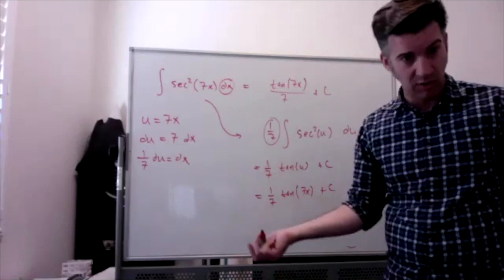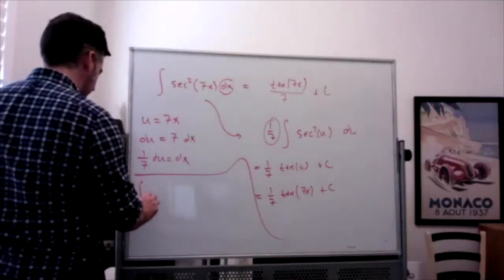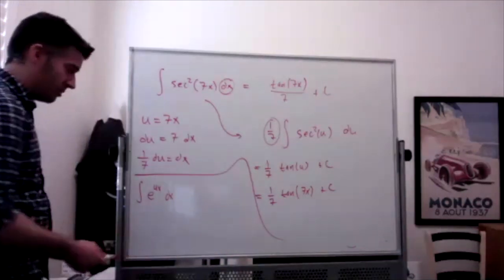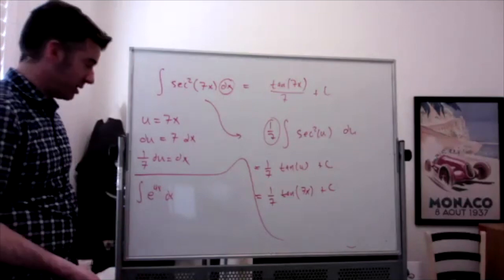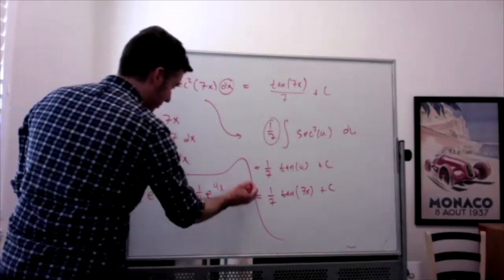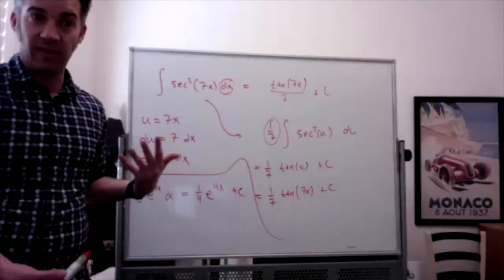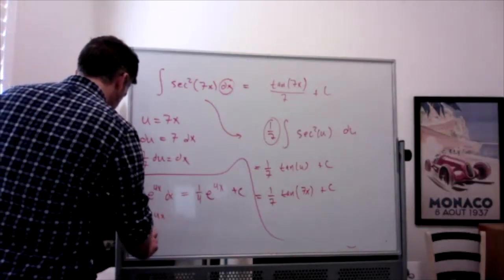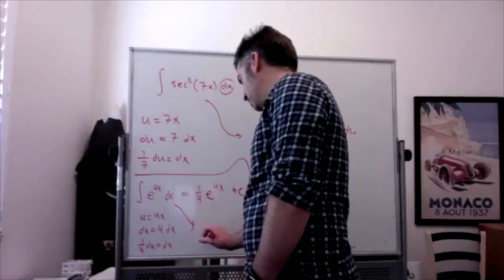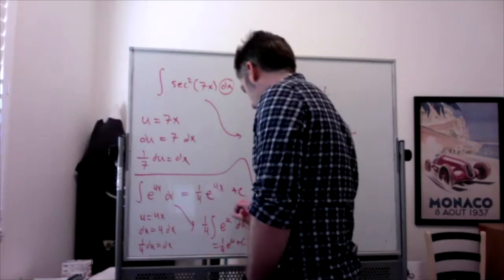I like to call this 'mini u-substitution' — you could do a full u-sub but you shouldn't ever really have to. For example, the integral of e^(4x) dx: you could let u=4x, du=4dx, so (1/4)du=dx, giving (1/4)∫e^u du = (1/4)e^u + c = (1/4)e^(4x) + c. I'd encourage everyone to be comfortable knowing this directly: when you have a function of a multiple of x, you divide by that coefficient of x.